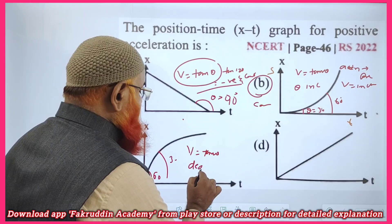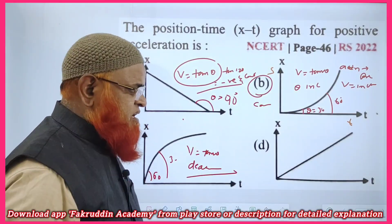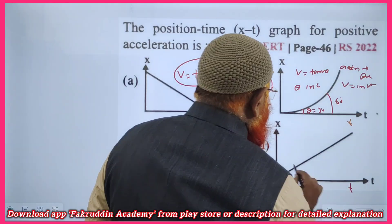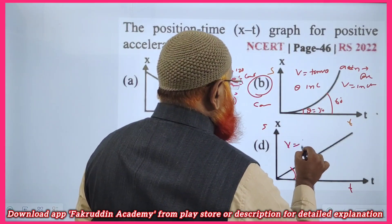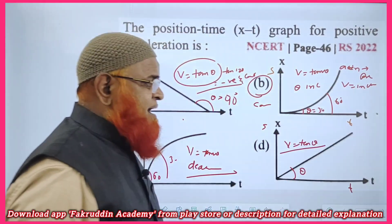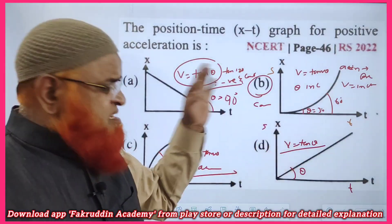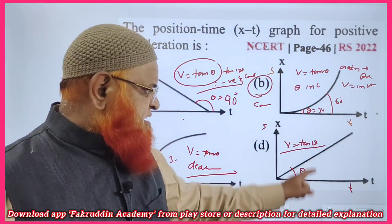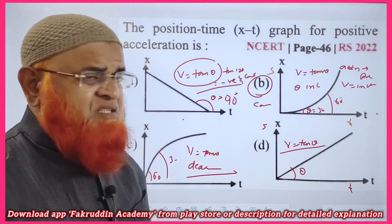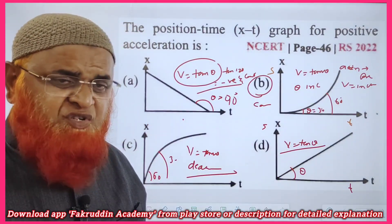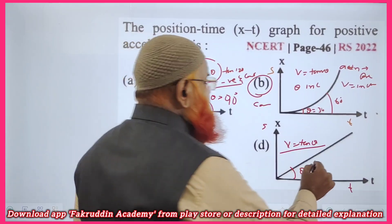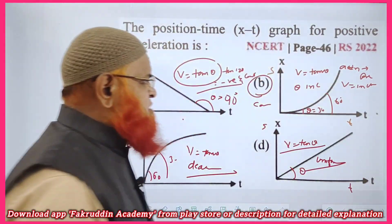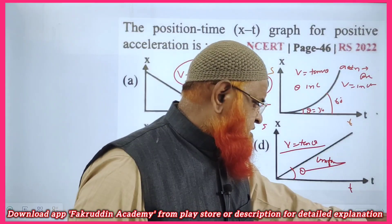In this displacement-time graph — repeating again — velocity is equal to tan theta. Looking at theta here: theta is going to be constant. When theta is constant, velocity is also constant. When velocity is constant, there is no acceleration — it is called uniform velocity. Hope you have understood this first problem.